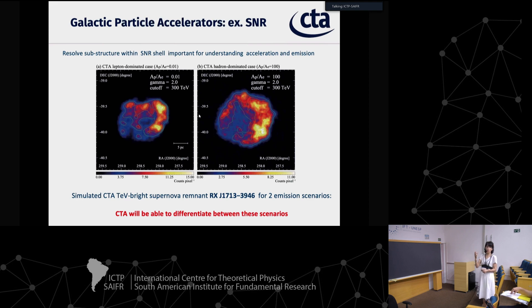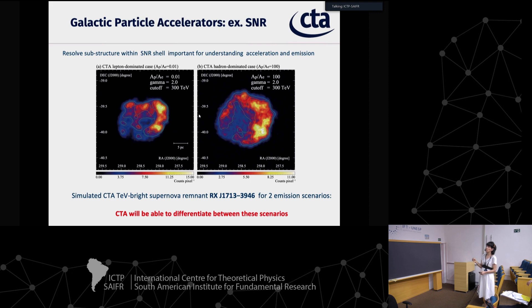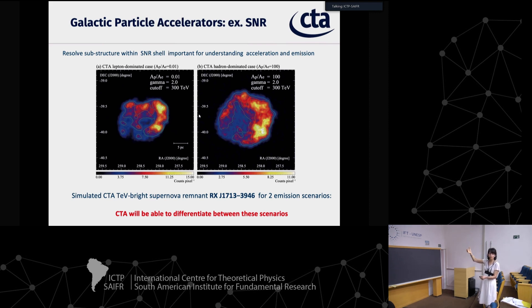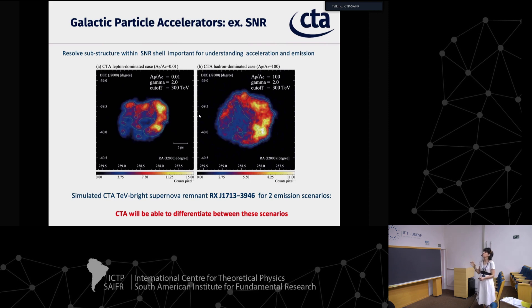This is an example of what CTA will do to resolve individual sources like supernova remnants. Here we have a CTA simulation of a supernova remnant for two emission scenarios: one if the emission is dominated by electrons (leptonic) or by protons (hadronic). Morphologically they look very different, so CTA will be able to differentiate between these scenarios in the TeV regime.